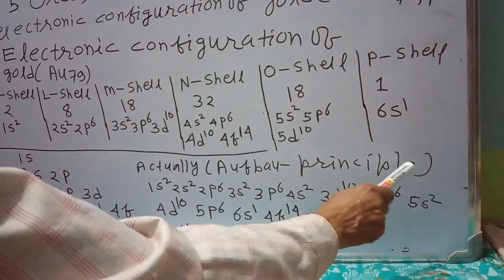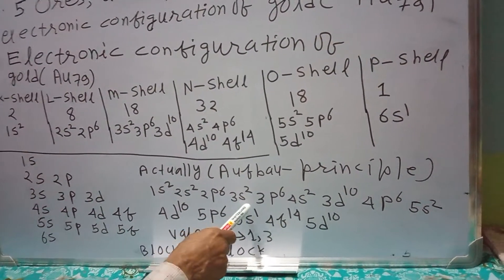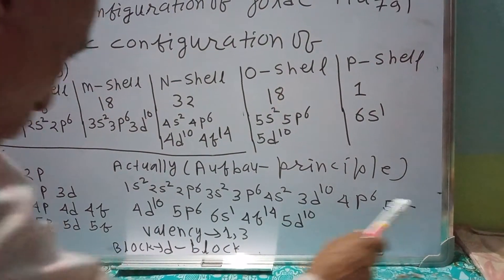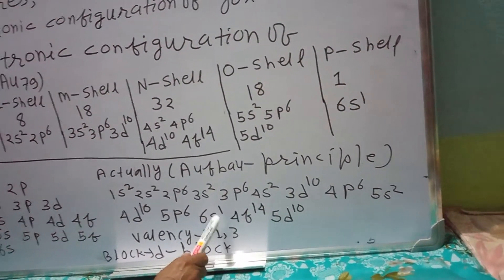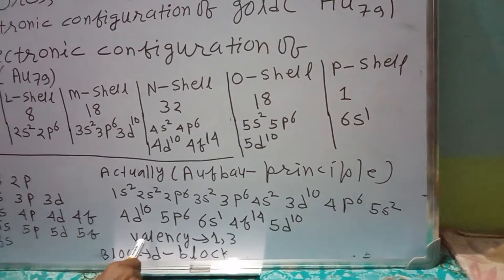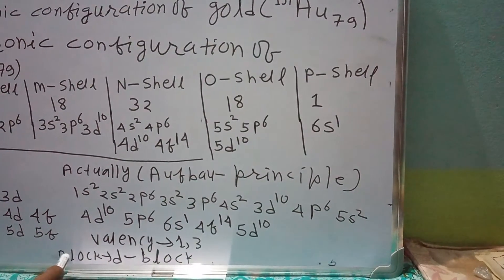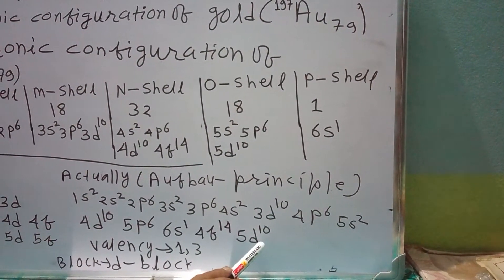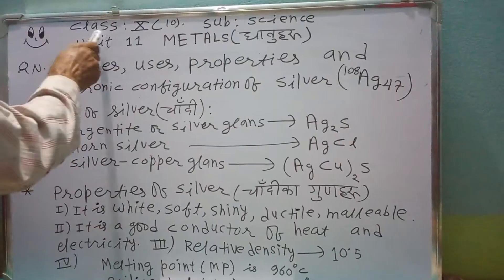According to the Aufbau principle, it is 1s² 2s² 2p⁶ 3s² 3p⁶ 4s² 3d¹⁰ 4p⁶ 5s² 4d¹⁰ 5p⁶ 6s¹ 4f¹⁴ 5d¹⁰. Valency is 1, 3. That means the valency of gold is 1, 3. Block: the last electron just enters the d-block, so it belongs to the d-block.